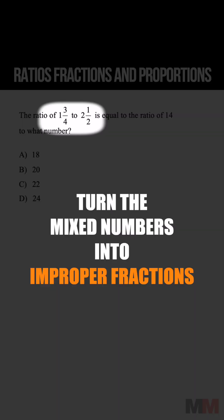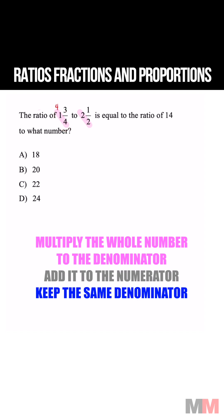Start off by turning these mixed numbers into improper fractions. 1 times 4, which is 4, and then add it to 3. That's going to be 7 over 4.